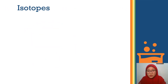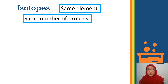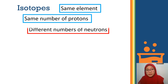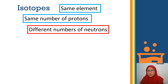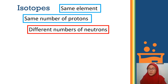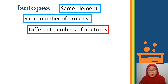Next, we move to isotopes. What is an isotope? An isotope is the same element with the same number of protons, but with a different number of neutrons. That means the proton is the same, the neutron is different, and therefore the nuclear number will also be different, because the nuclear number is the total of proton and neutron.